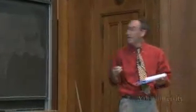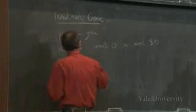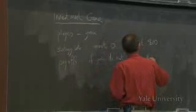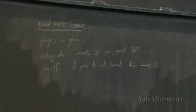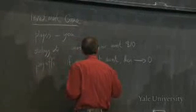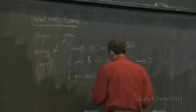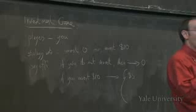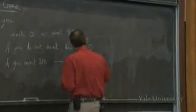As usual, we're missing something — the payoffs. Here are the payoffs. If you do not invest, i.e. you invest nothing, then your payoff is zero. Nothing ventured, nothing gained. But if you do invest $10 — remember each of you is going to be investing $10 — your individual payoffs are as follows. Here's the good news: you're going to get a profit of $5. You'll have invested $10, make a gross profit of $15, minus the $10 you originally invested, for a net of $5.